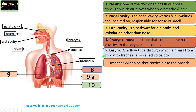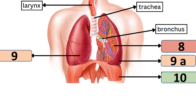The next structure is the bronchus. These are two large airways or tubes that carry air from the trachea into the lungs and back out. The trachea splits to form two primary bronchi — one to the right lung and one to the left lung. The main bronchus splits further to form secondary and tertiary bronchi.